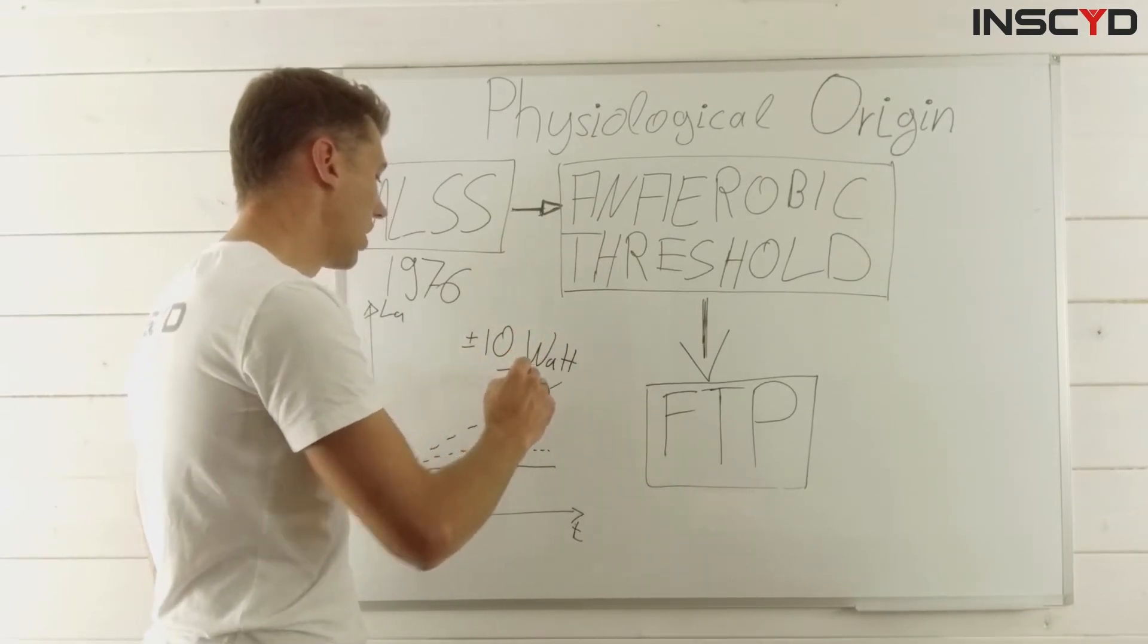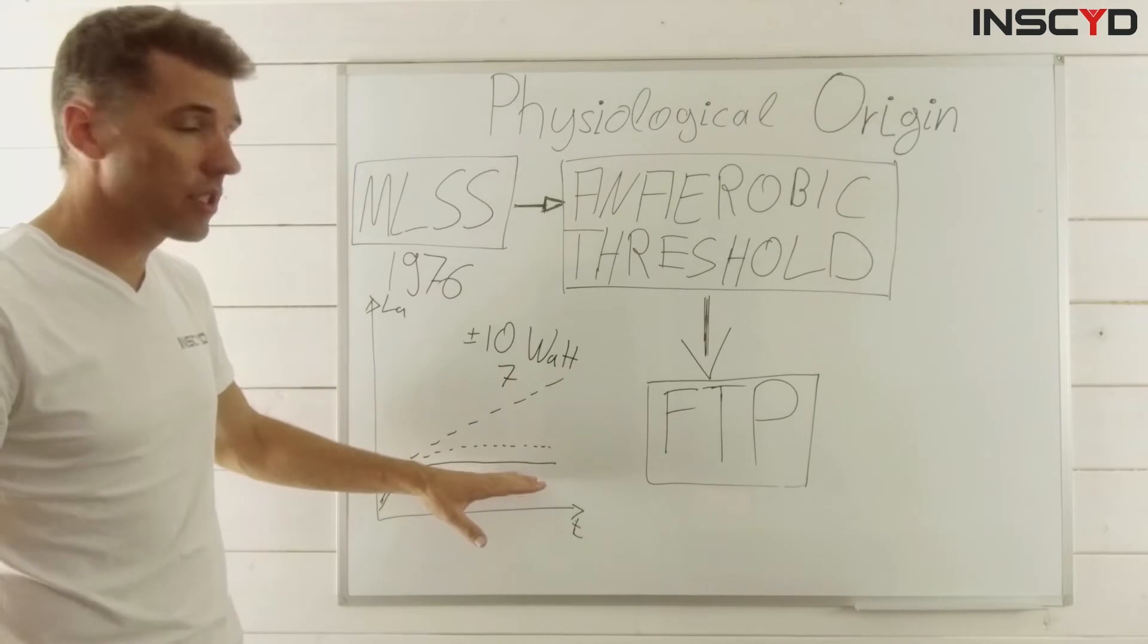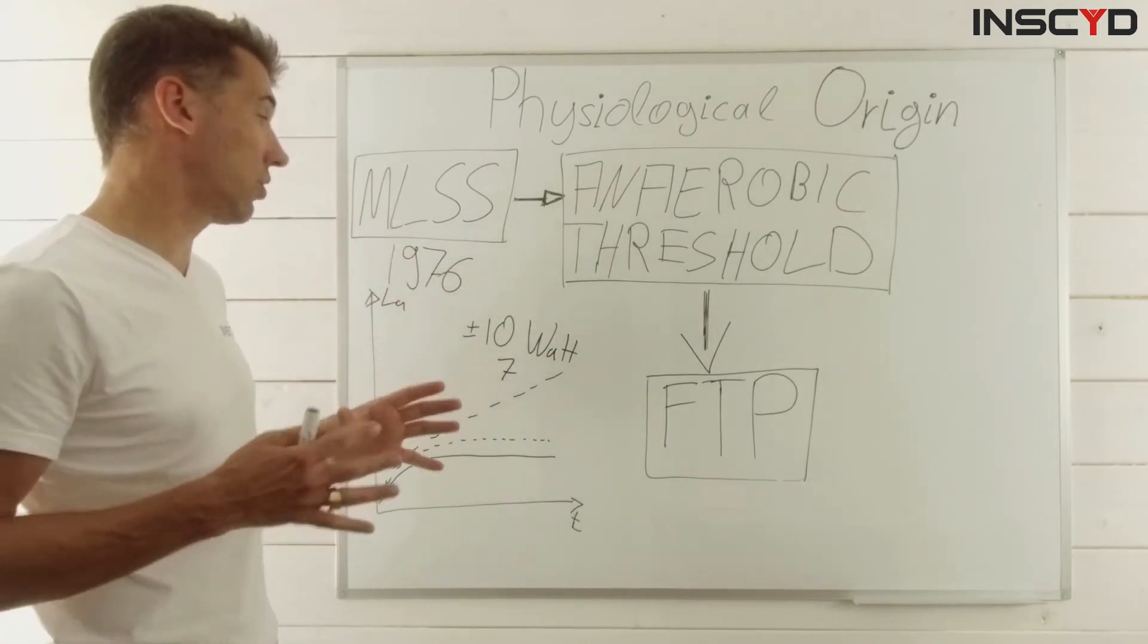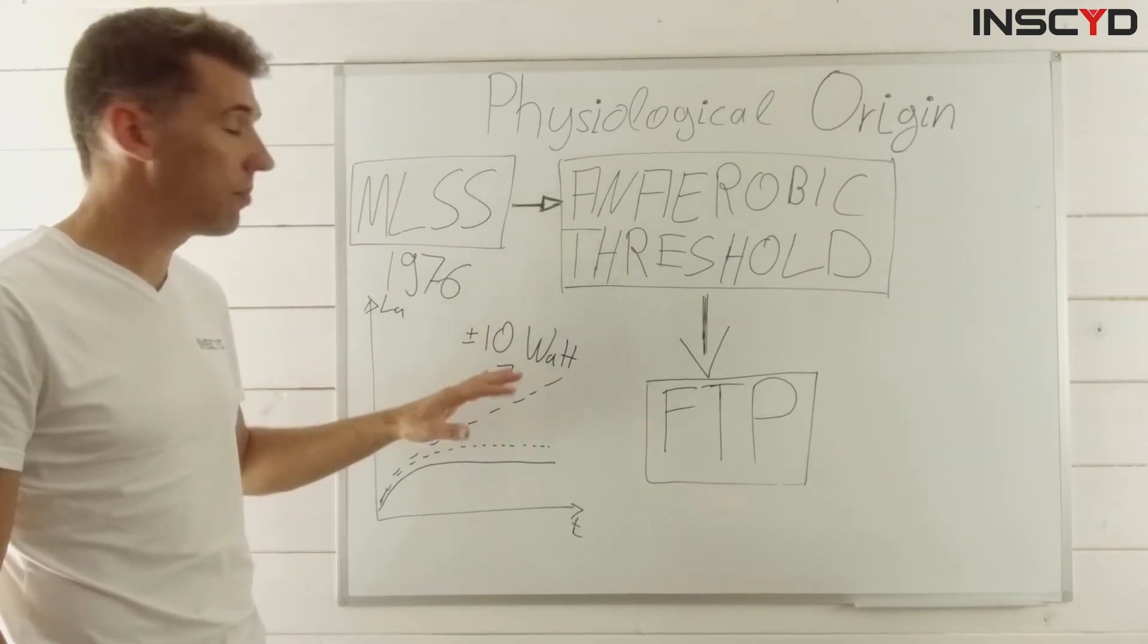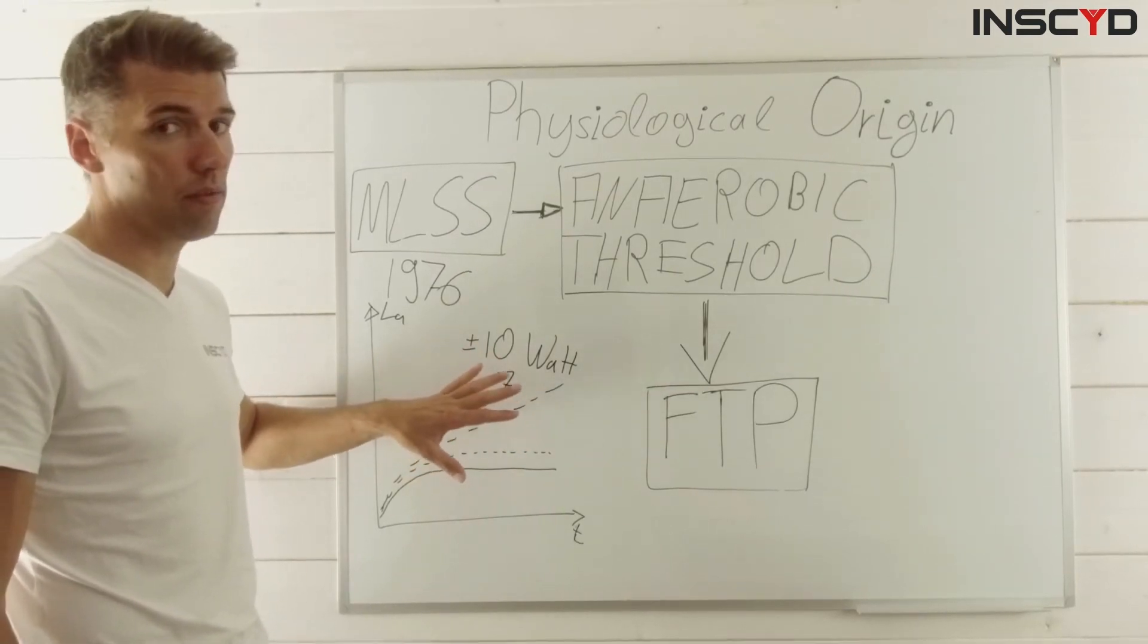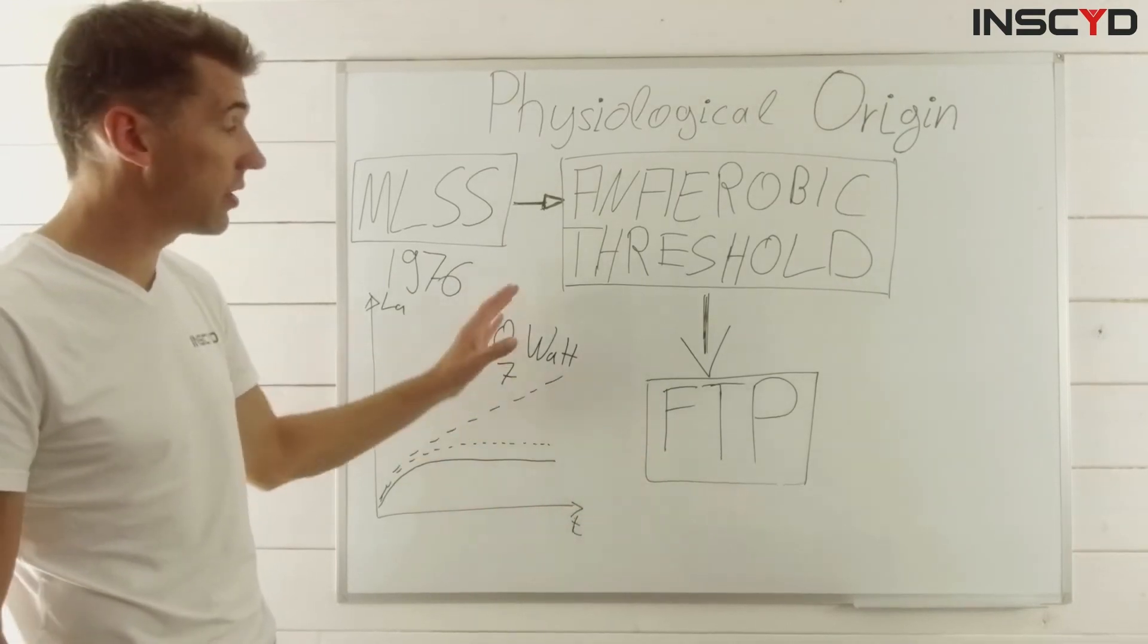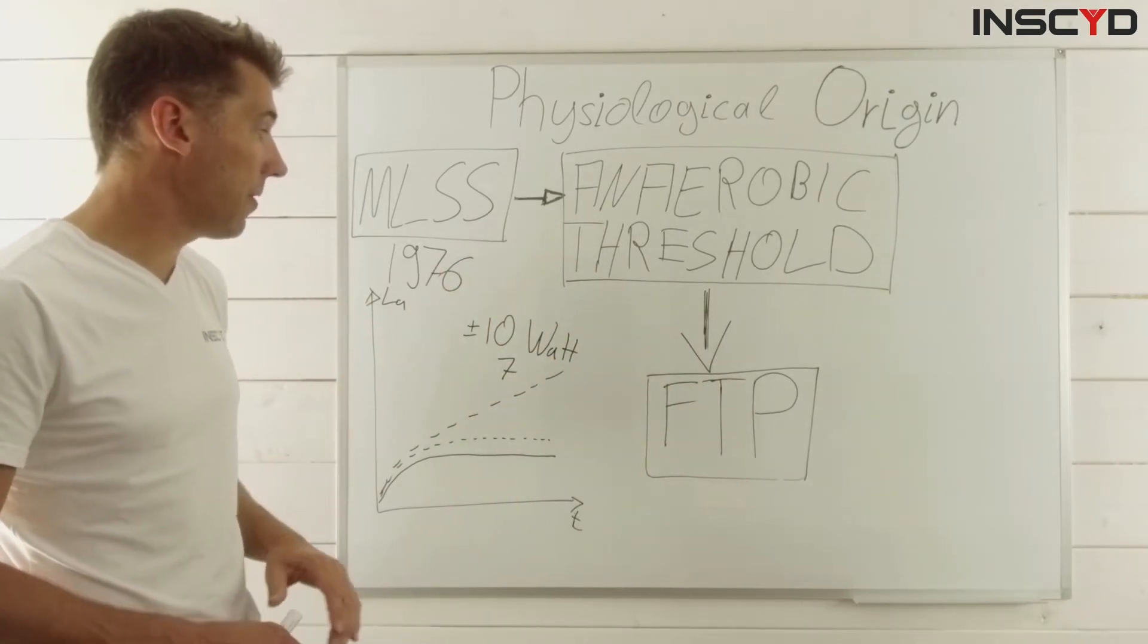In some cases, maybe 7. So that's an important side note, because it basically tells you that even with this gold standard, so this MLSS is the gold standard to determine the real threshold, the resolution is never better than approximately 7 or 10 watts, maybe depending a little bit on the body weight. So even with this gold standard, it is not valid, it is not correct to even discuss changes in power output at threshold smaller than this. And then obviously, this is also true for any approximation of this metabolic state.